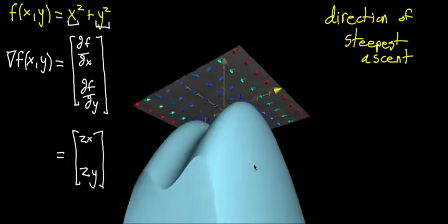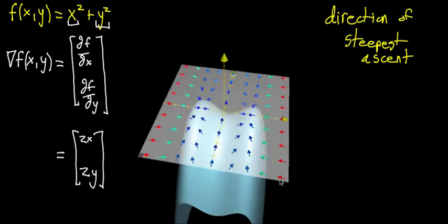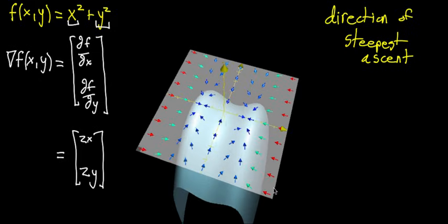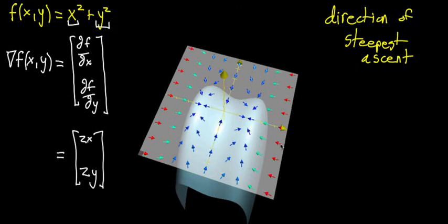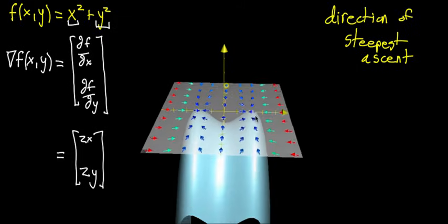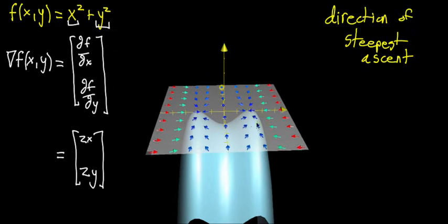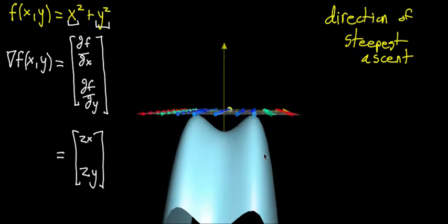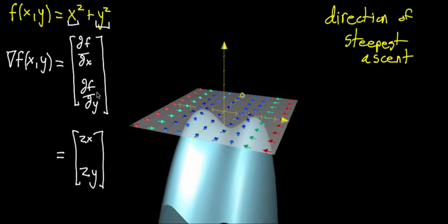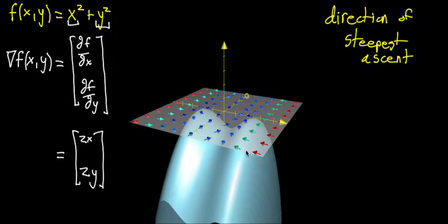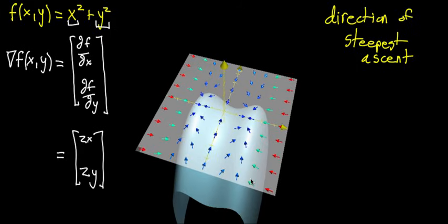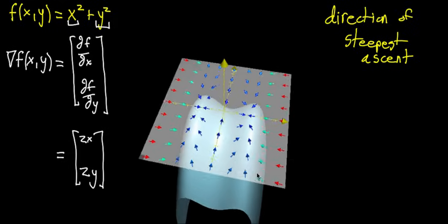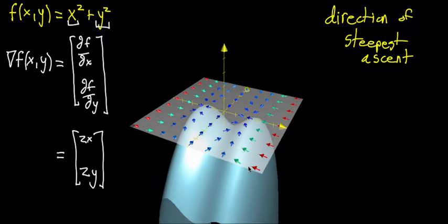That's what the direction of the gradient means — but what does the length mean? The red vectors, which represent very long vectors, correspond to points on the graph that are really steep. The blue ones correspond to relatively shallow slopes — near the peak, things start leveling off. So the length of the gradient vector tells you the steepness of that direction of steepest ascent. It doesn't immediately seem obvious why throwing the partial derivatives into a vector gives you the direction of steepest ascent — that connection will become clear when we talk about the directional derivative. See you next video.